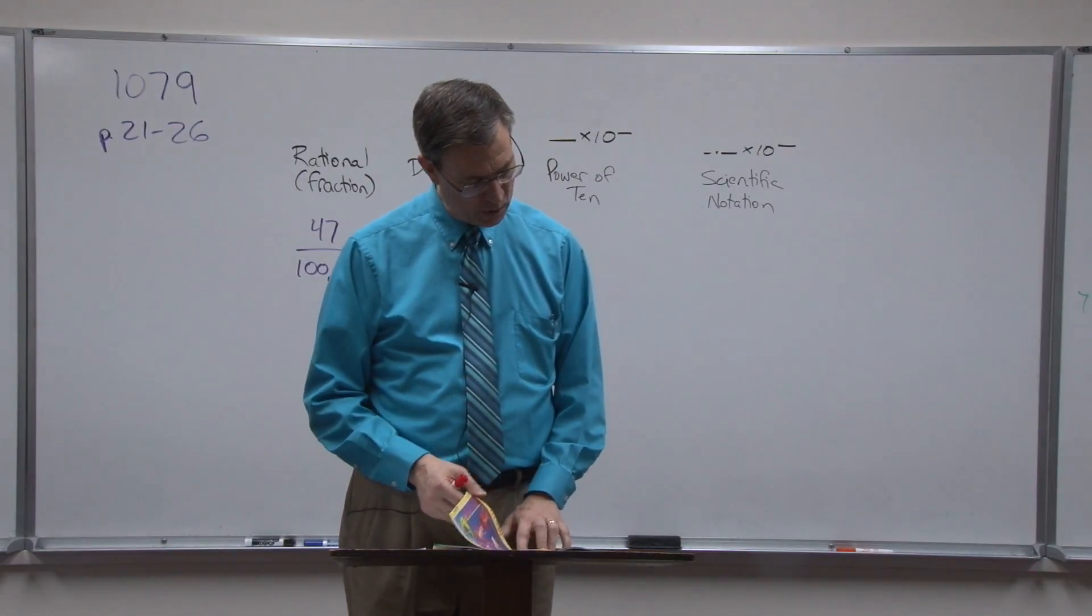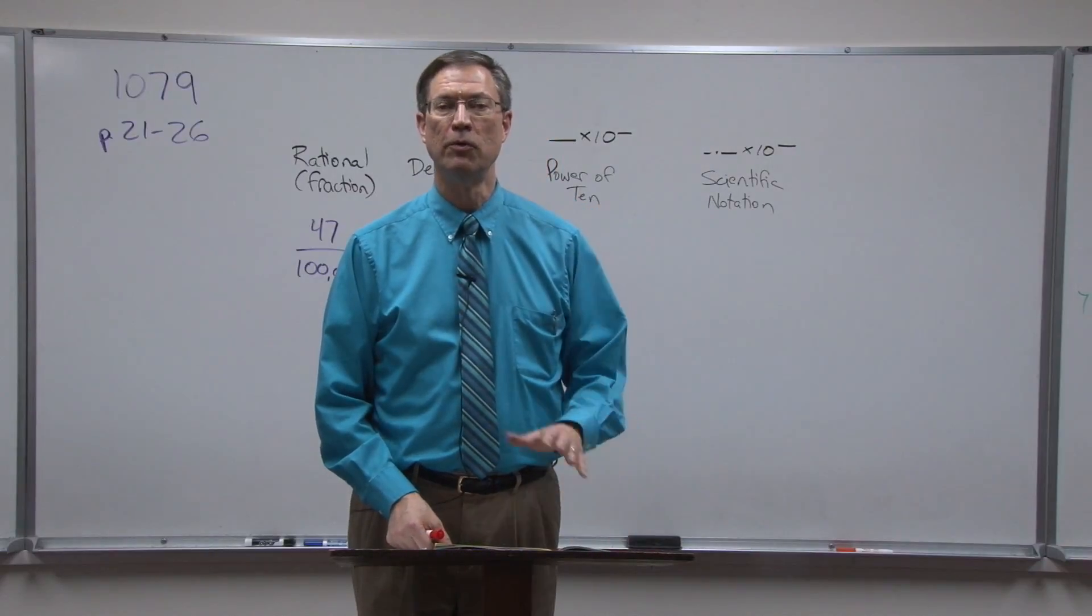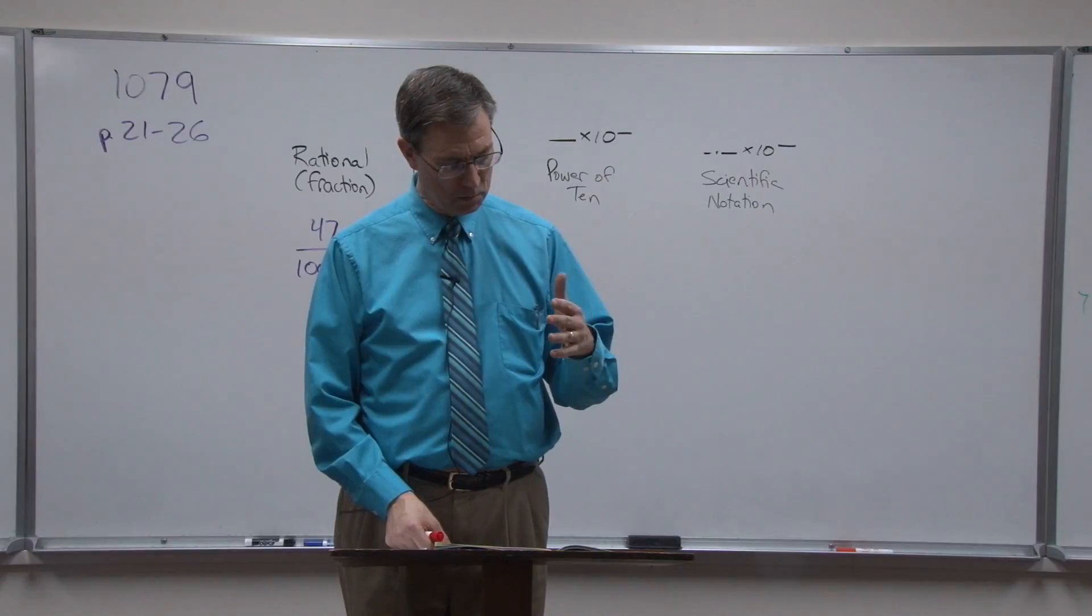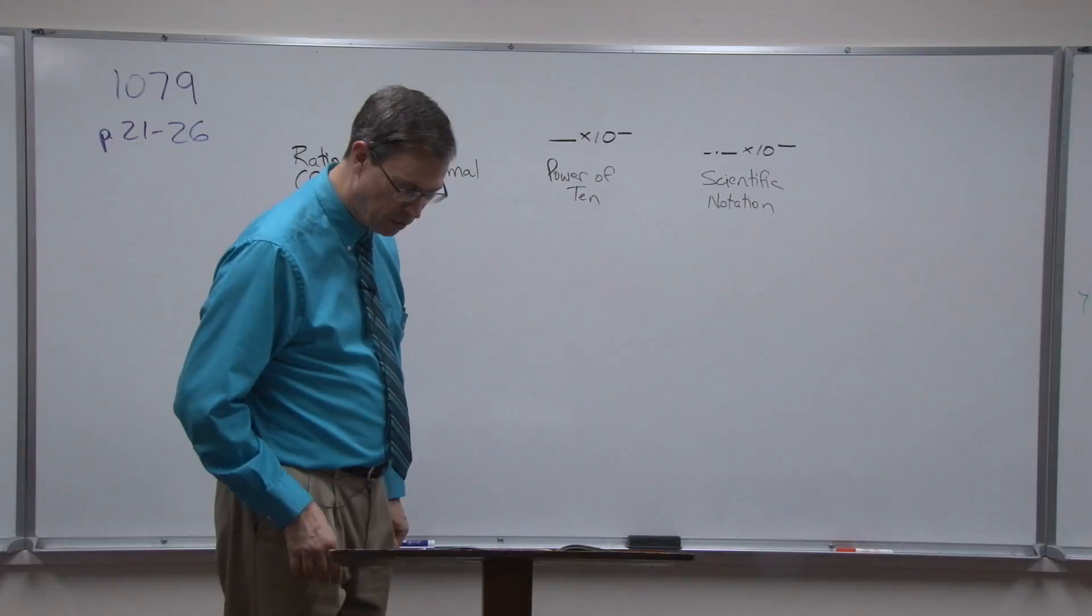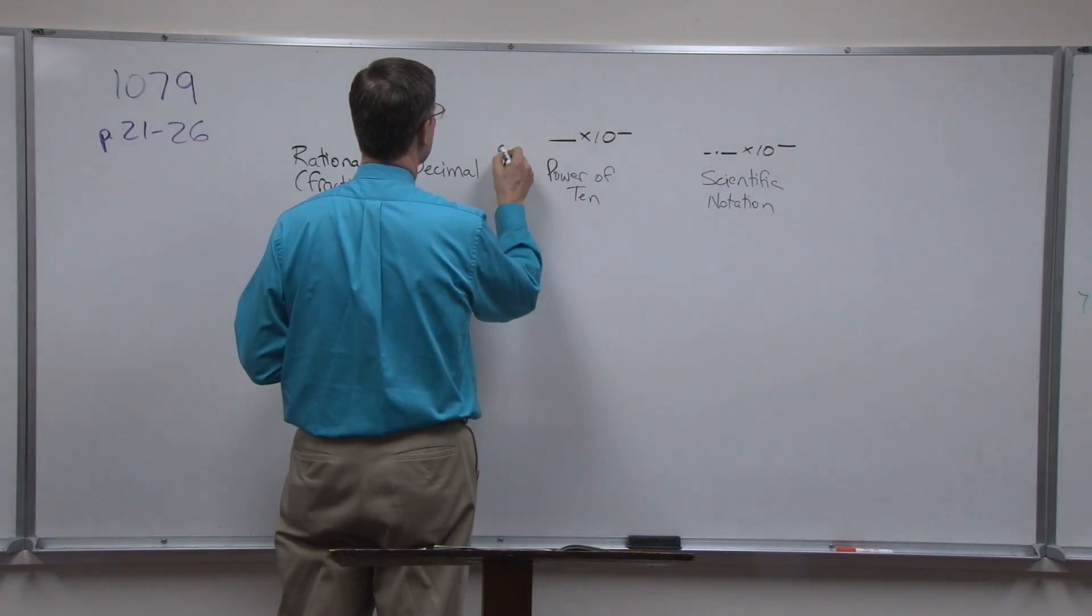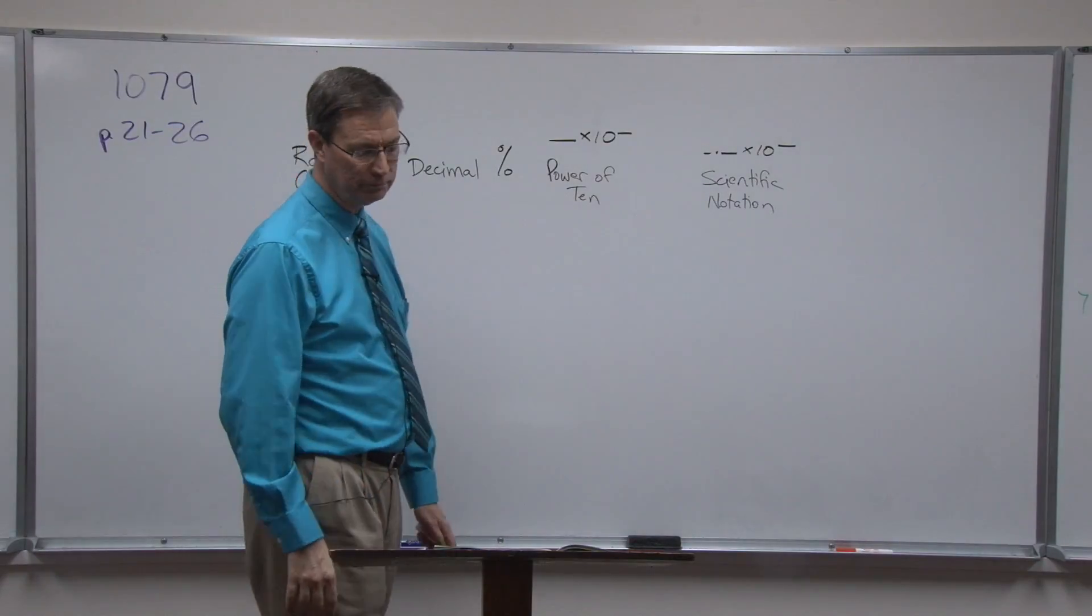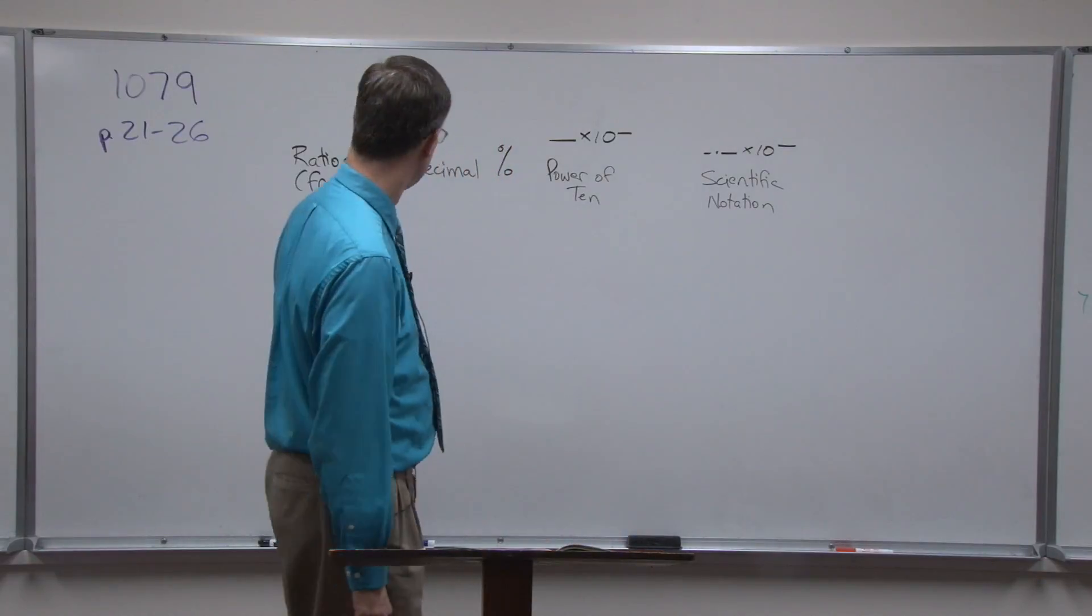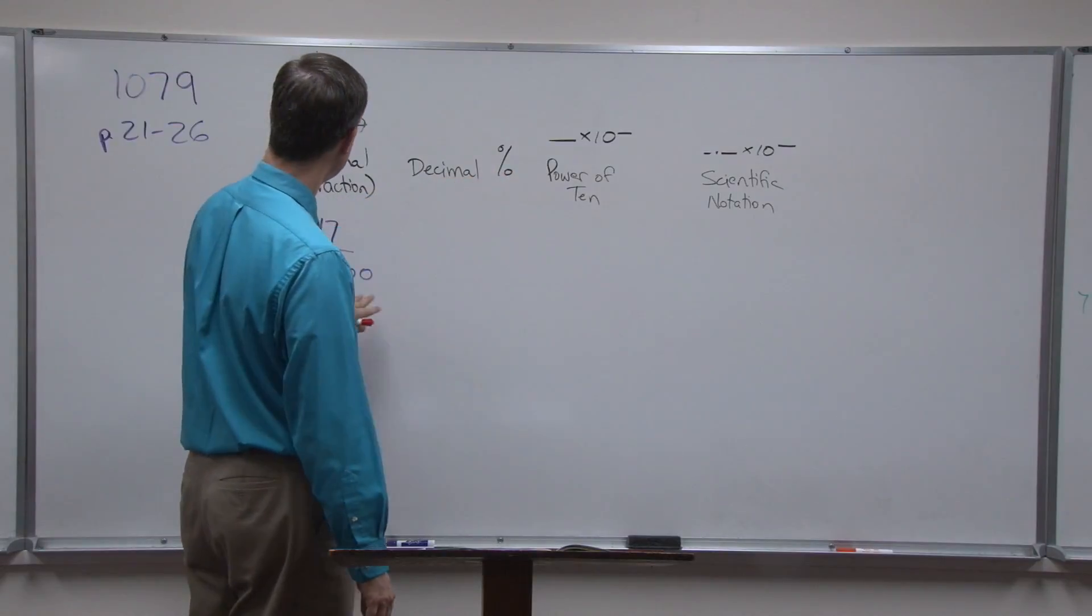Then on page 25 and 26, let's go there. They have a chart on both pages where you're supposed to convert from a rational number first to a decimal, and then write it as a percent. I forgot to put the percent in here, I just noticed, so I'm going to insert that real quick. And then power of 10, and then finally scientific notation. So one, two, three, four, five columns for each of these numbers.